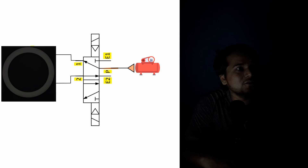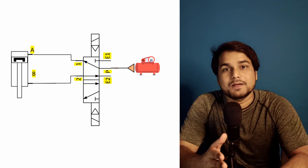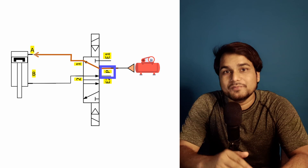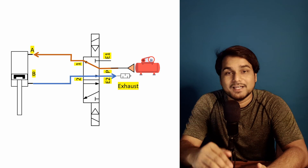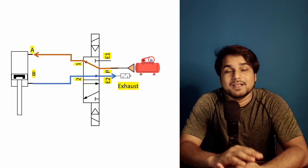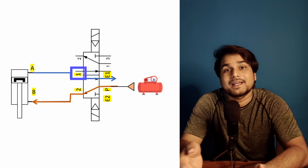Position state means the pneumatic valve has two operating actions — for example, like a light switch: position 1 turns the light off, position 2 turns it on. For the 5/2 valve: at position 1, the compressed air supply port P connects with port 1 and port 2 connects with exhaust port E2, so the cylinder goes down. At position 2, port P connects with port 2 and port 1 connects with the exhaust, so the cylinder goes up.